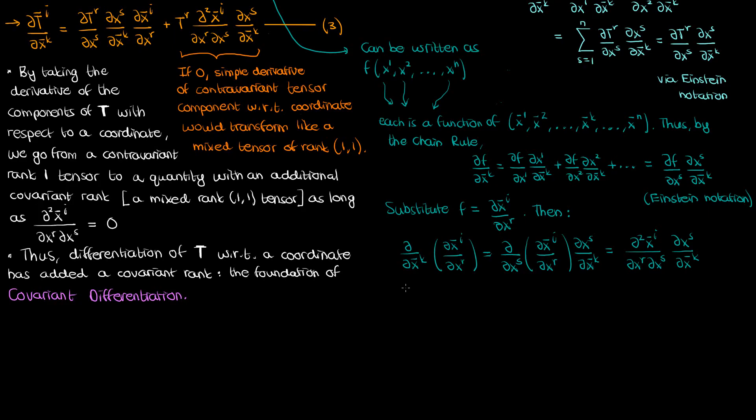But I should remind you that the covariant derivative of a tensor is not just the partial derivative of the component of the tensor with respect to the coordinate. It also contains other terms involving things like the Christoffel symbol, but I'll get to that in a future video.